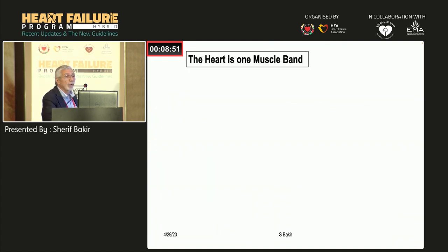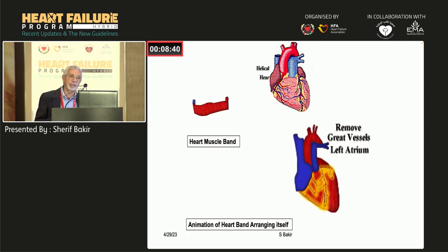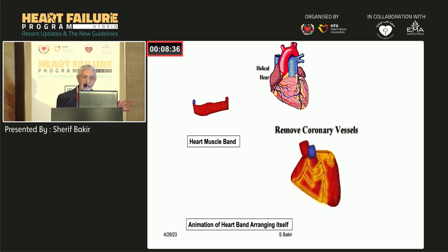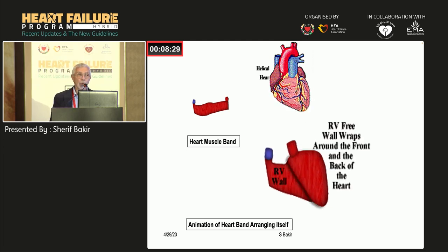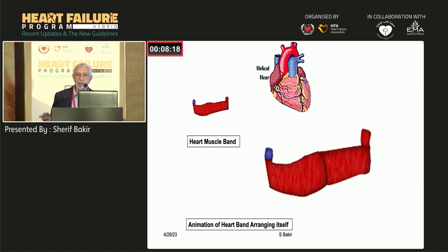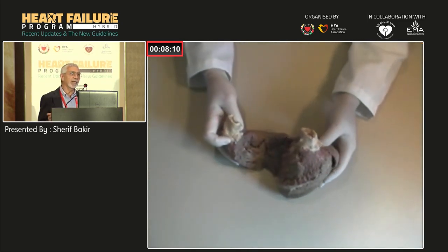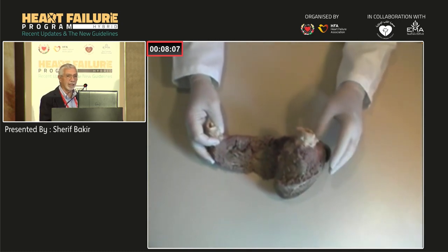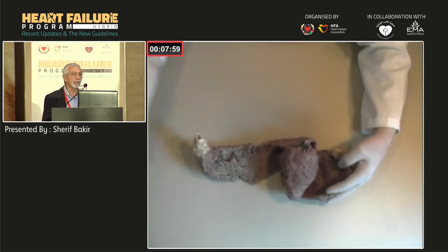The heart is not simply a right ventricle and left ventricle — it is one muscle band. If you remove the great vessels and open the heart muscle, it is one single band. This means anything affecting the left side will affect the right side. We were taught that the right and left ventricles are two separate organs, but that is not true. This is the anatomy — not a cartoon — and it illustrates the danger of hypertension because it affects both sides.